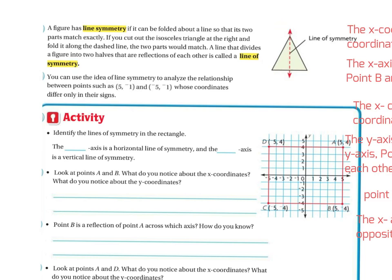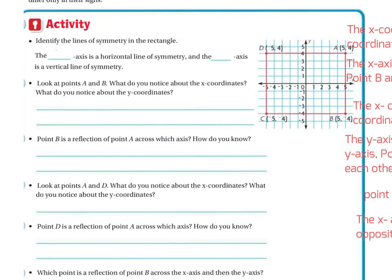A line that divides the figure into two halves that are reflections of each other is called the line of symmetry. You can use the idea of line symmetry to analyze the relationships between points such as (5, -1) and (-5, -1), whose coordinates differ only in their signs. Identify the lines of symmetry in the rectangle. The x-axis is a horizontal line of symmetry, and the y-axis is a vertical line.